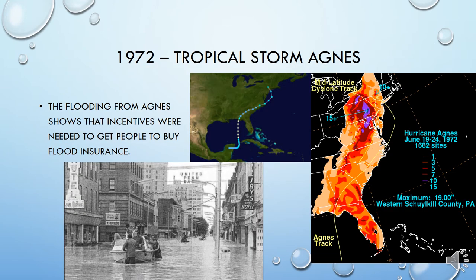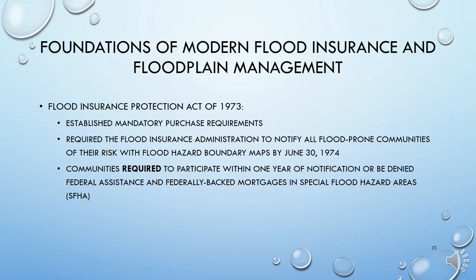In 1972, the United States was hit by Tropical Storm Agnes, which caused a lot of flooding along the eastern coast of the United States. It showed that incentives were actually needed to get people to buy flood insurance, because in those communities that were trying to regulate the floodplain, you still didn't have many people buying flood insurance, mainly because it was still very expensive. So the foundations of the modern flood insurance program and floodplain management really got started in 1973 with the Flood Insurance Protection Act of 1973.